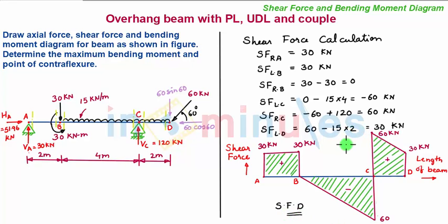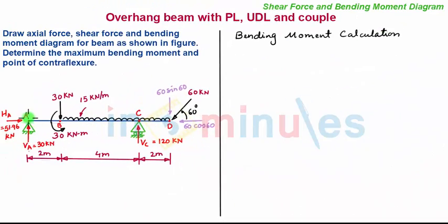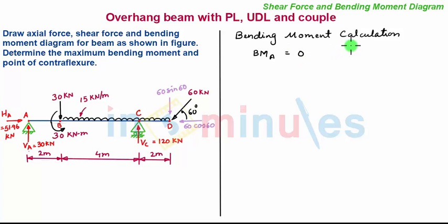With the shear force diagram complete, we now proceed towards bending moment calculation and the bending moment diagram. We move the section from A towards point D. The bending moment at A is given as zero, since the summation of all moments about point A is zero.